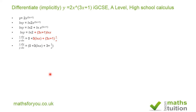If we then multiply both sides by y, we end up with dy/dx equal to 3 times natural log of x plus 3 plus 1 over x, all times y. But we know that y is equal to 2x raised to the power 3x plus 1.